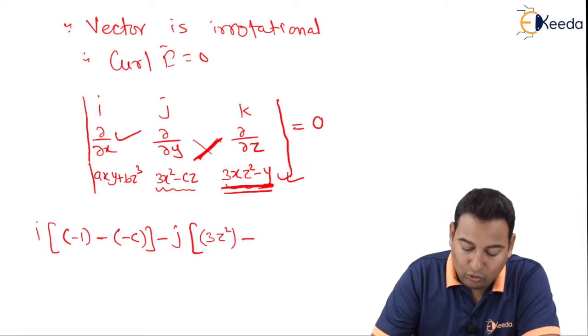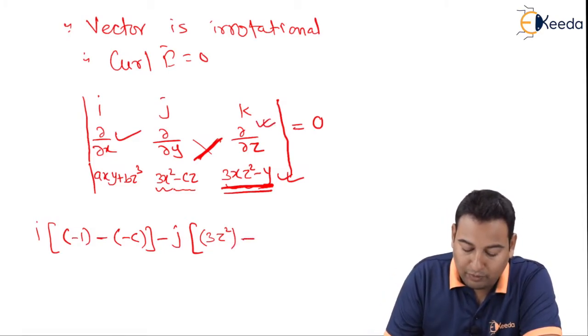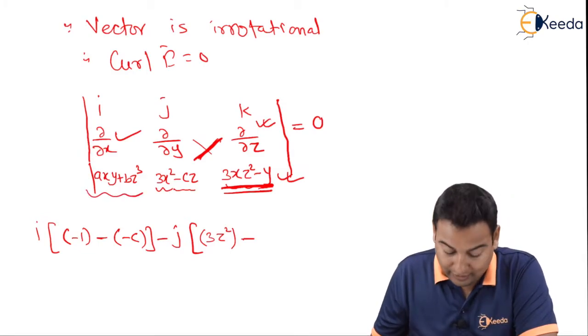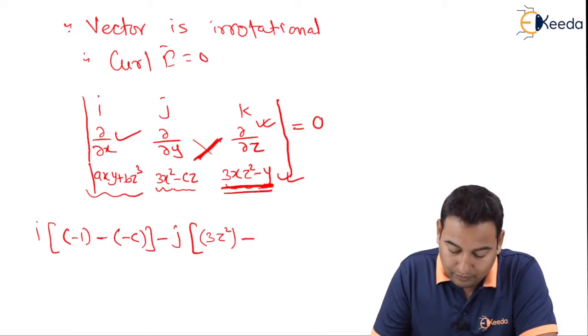Minus del by del z, differentiating with respect to z. That is del by del z of Axy, 0. Bz cubed, B is constant, z cubed derivative is 3z squared.